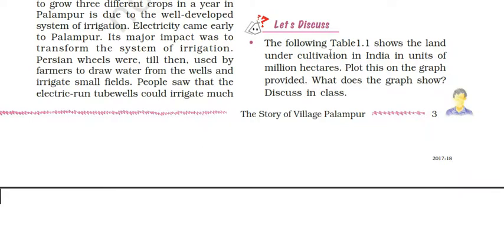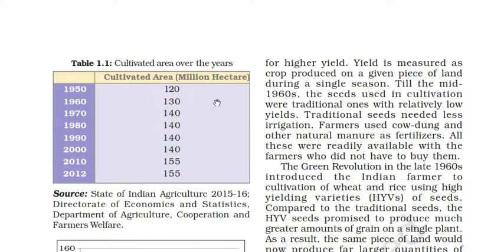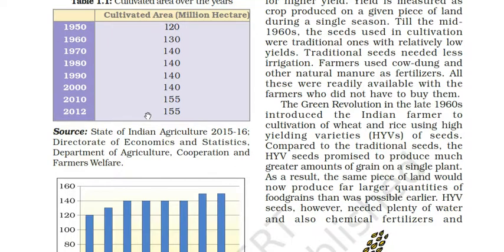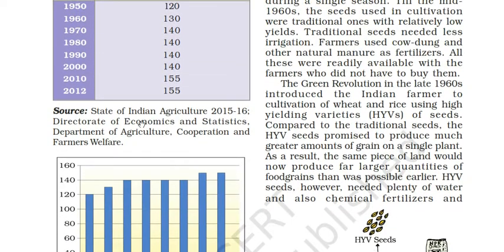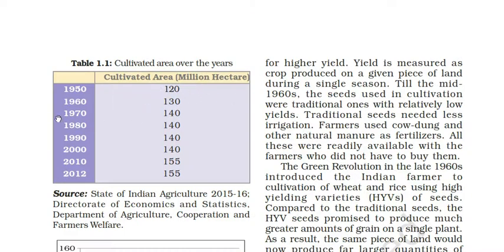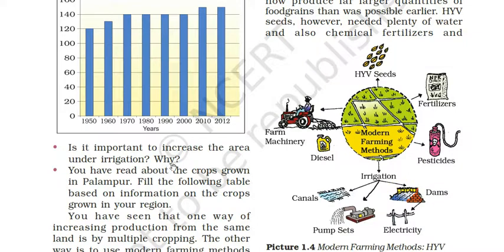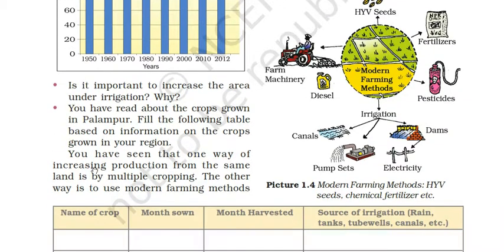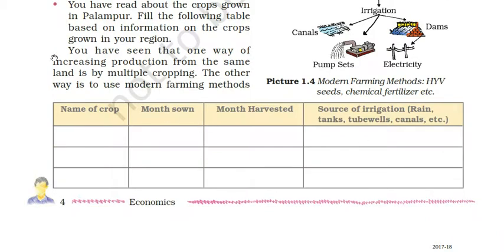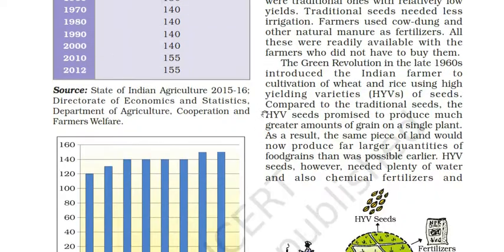Table 1.1 shows land under cultivation in India in units of million hectares - you need to plot this on a graph and discuss what it shows. The data from the Department of Agriculture Cooperation and Farmers' Welfare covers 1950 to recent years. The cultivated area was 120 million hectares in 1950, then 130 in 1960, and so on. Another way of increasing production from the same land, besides multiple cropping, is to use modern farming methods for higher yield. Yield is measured as crop produced on a given piece of land during a single season.